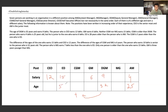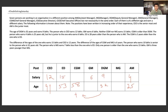AM is 53. CGM is 5 years older than ED, so I'm marking CGM as 58. The difference in ages of the one who earns 15 lakhs and the CEO is 12 years, so that person is 41 years old. And the difference between the ages of CGM and MG is 6 years, so MG should be 52.